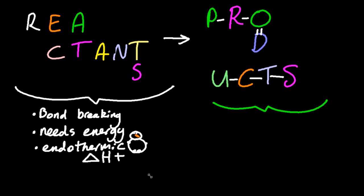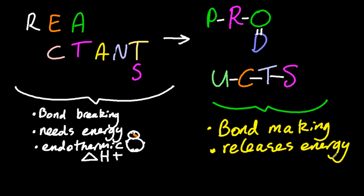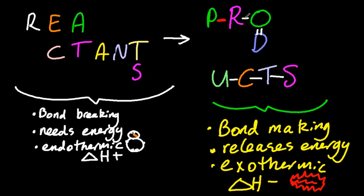Now the opposite is true for making the products. When I'm making the products, I'm bond making. And that releases energy. And releasing energy is called exothermic, and delta H is negative. And that feels hot. The surroundings gets hotter as energy is released. So I've made those lines red to show that I'm releasing energy there.